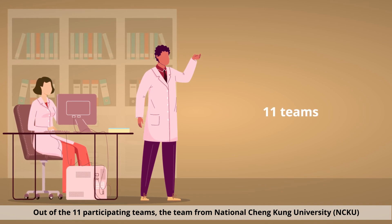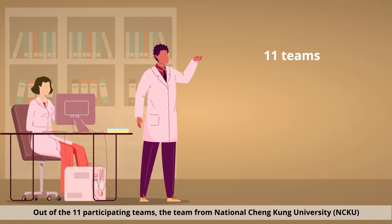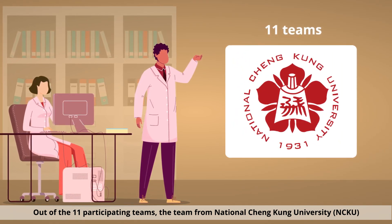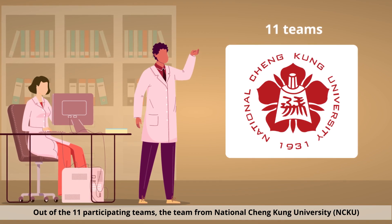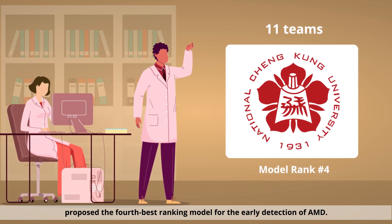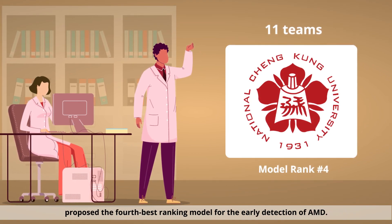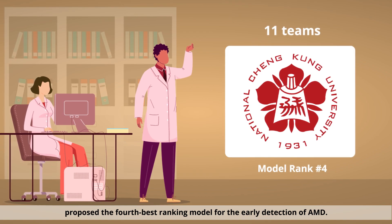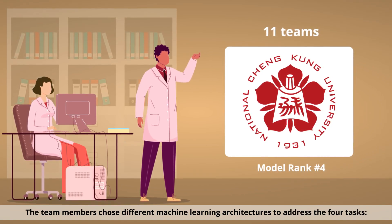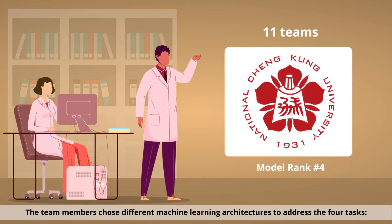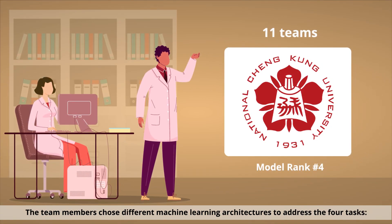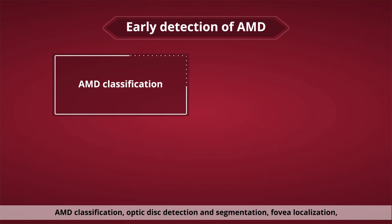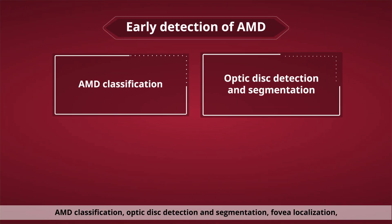Out of the 11 participating teams, the team from National Chengkung University, NCKU, proposed the fourth best ranking model for the early detection of AMD. The team members chose different machine learning architectures to address four tasks.